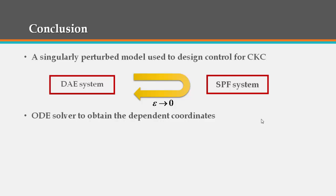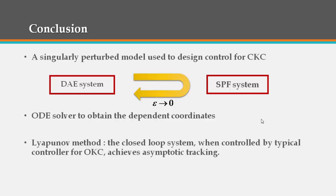The composite Lyapunov method is used to show that the closed loop system, when controlled by typical controller for open kinematic chains, achieves asymptotic tracking.